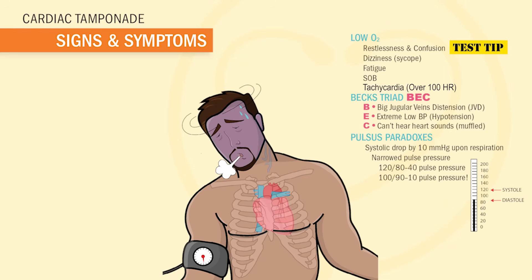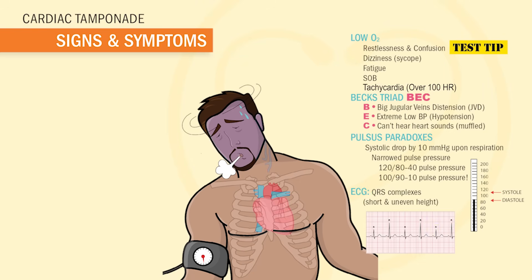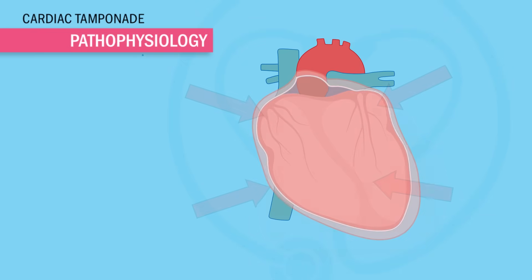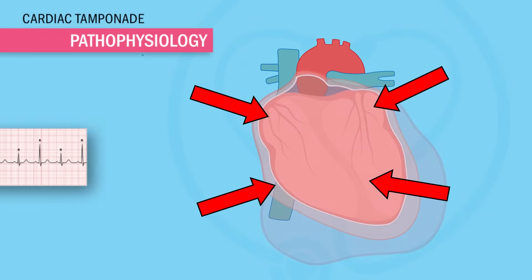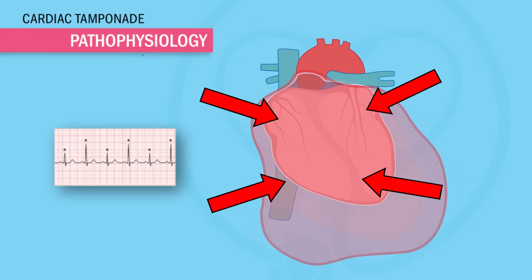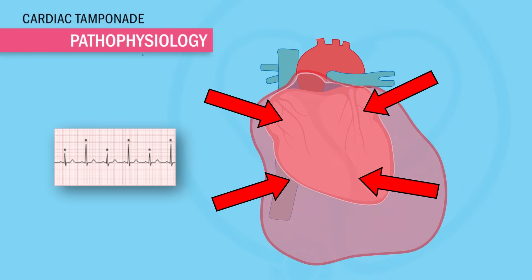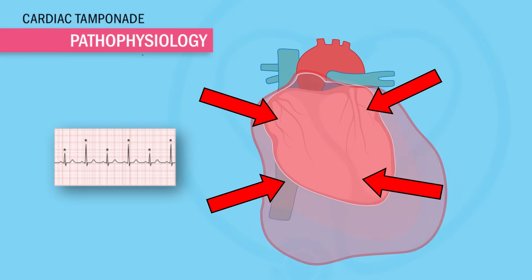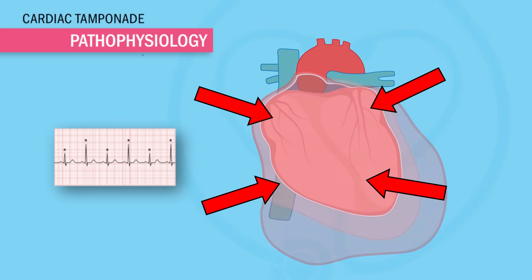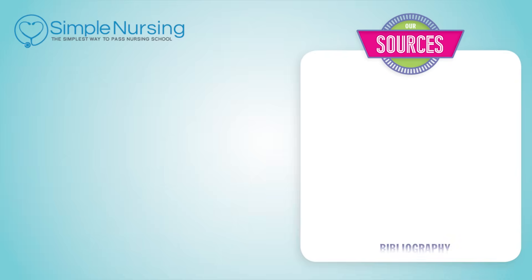As far as the heart waves on the cardiac monitor, it's going to show uneven low voltage waves in our QRS complex. Just think of the pathophysiology here — we have a heart that is getting squished, and our big ventricles squeeze those QRS complexes.